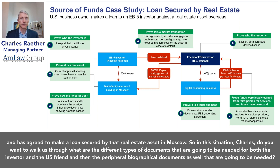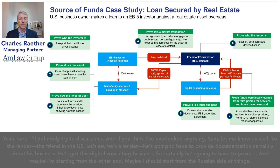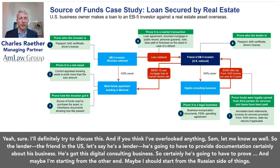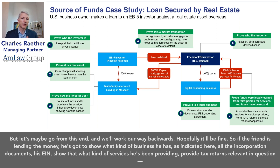Now let's talk about the EB5 source of funds cover letter. We usually call it a memo because these can be quite detailed and lengthy. The memo consists of information related to the project to show the officer that the project meets the qualifications and requirements of the program — that's provided by the regional center — and from our side, information about the source of funds. This is the document where both parts come together: the project documentation and the source of funds.